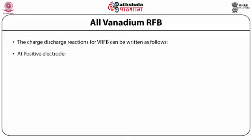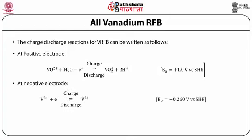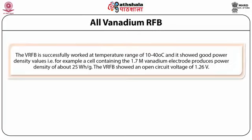The charge-discharge reactions for VRFB are as follows. At the positive electrode: VO2+ + H2O − 1 electron charges or discharges to give VO2+ + 2H+, with E0 = +1.00 V vs. SHE. At the negative electrode: V3+ + 1 electron charges or discharges to give V2+, with E0 = −0.26 V vs. SHE. The overall reaction becomes: VO2+ + V3+ + H2O charges or discharges to give VO2+ + V2+ + 2H+.